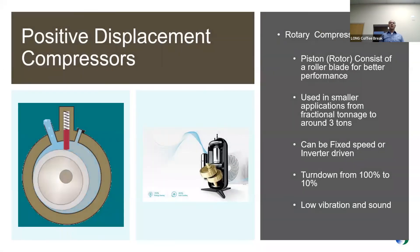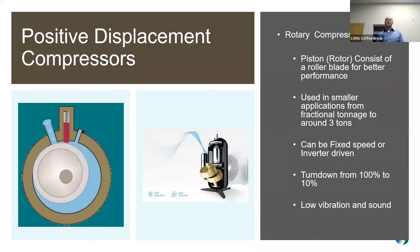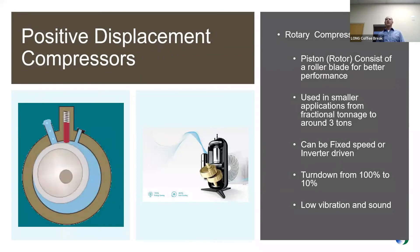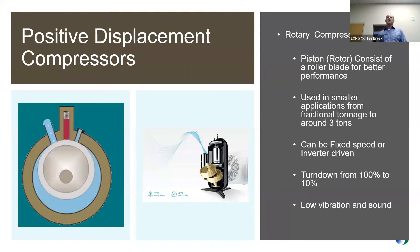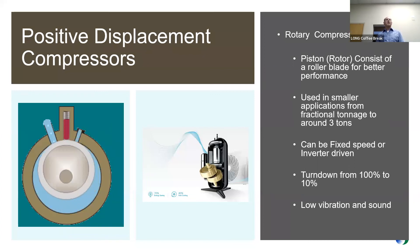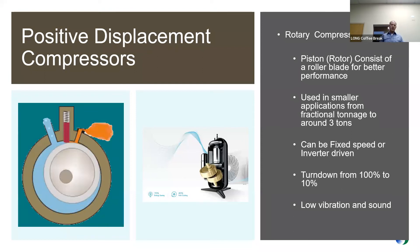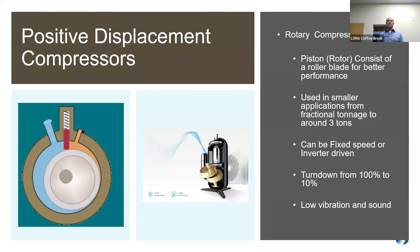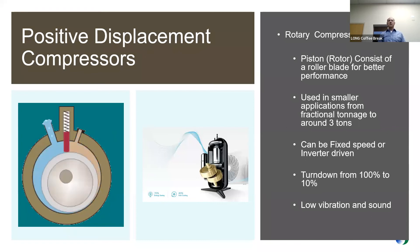The rotary compressor has been around for quite some time. It's a hermetically sealed compressor — completely encased — with a shaft and an orbital-type piston that moves around the cylinder. These are traditionally seen in smaller applications up to about three tons. They can be inverter-driven, but are typically fixed speed in small applications like PTACs. In duct-free split systems, we start seeing inverter-driven versions that can turn down to 10%. One of the nice features of rotary compressors is low vibration and sound.